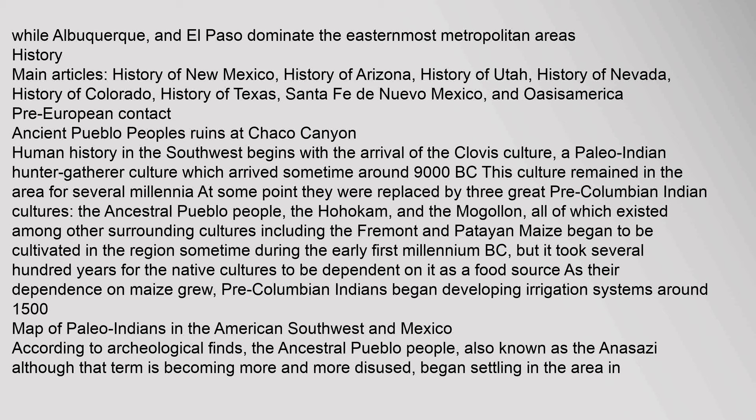Human history in the southwest begins with the arrival of the Clovis culture, a Paleo-Indian hunter-gatherer culture which arrived sometime around 9000 BC. This culture remained in the area for several millennia. At some point they were replaced by three great pre-Columbian Indian cultures: the ancestral Pueblo people, the Hohokam, and the Mogollon, all of which existed among other surrounding cultures including the Fremont and Patayan. Maize began to be cultivated in the region sometime during the early first millennium BC, but it took several hundred years for the native cultures to be dependent on it as a food source.